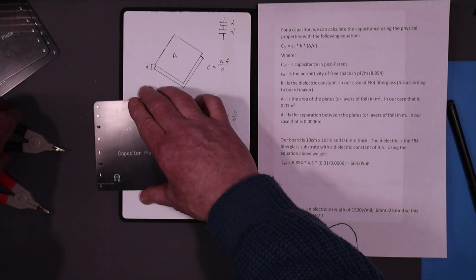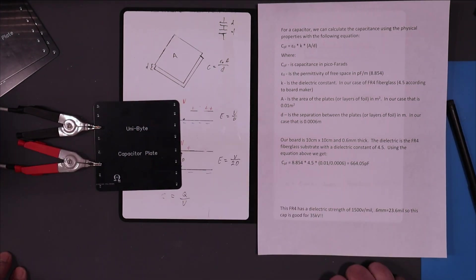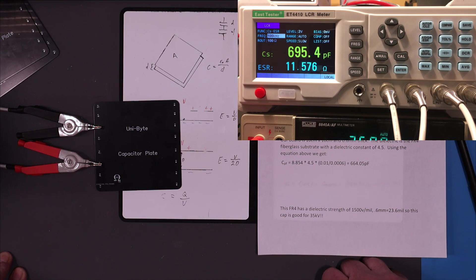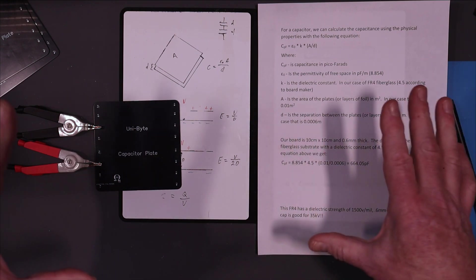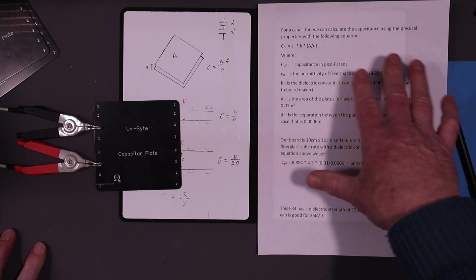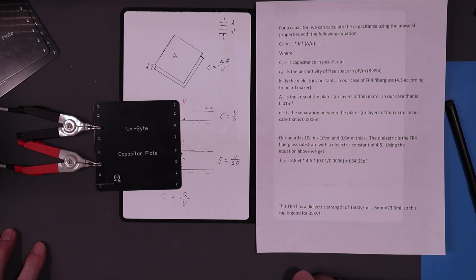Let's hook this one up and see what the meter tells us. 695.5. So I'd say we did good. We've shown here that all this stuff, purely based on the physical properties of the capacitor, provides us with a great approximation of the actual capacitance of the capacitor.